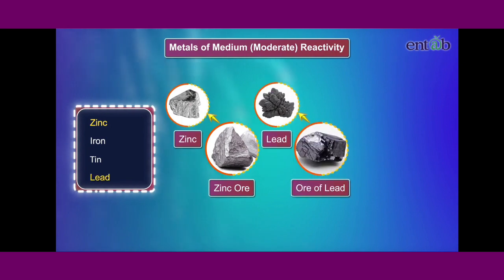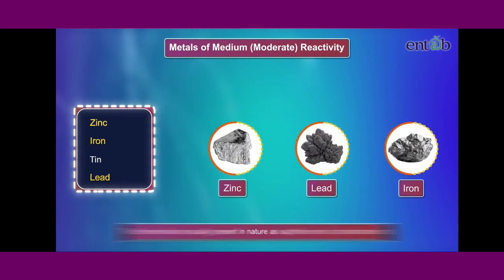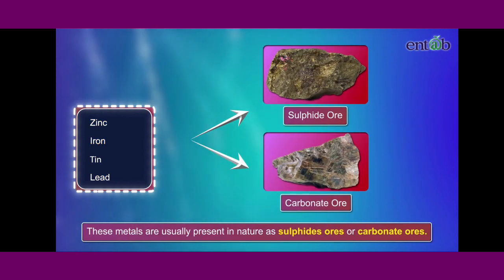Zinc, lead, iron and other metals are examples. These metals are generally present in nature as sulfide and carbonate ores.